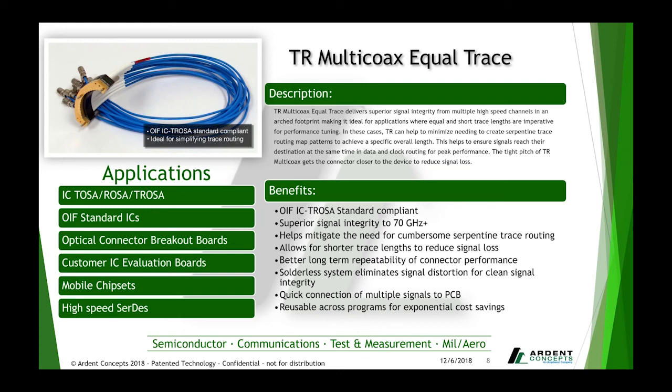With TR Multicoax, you get access to superior signal integrity out to 70 GHz. It will help you mitigate the need for cumbersome serpentine and long trace routing, allowing a shorter trace length to reduce signal loss through your system and device. Better long-term repeatability of connector performance, a solderless system that eliminates signal distortion for clean signal integrity, and a quick connection of multiple signals to the PCB — reusable across programs for exponential cost savings.